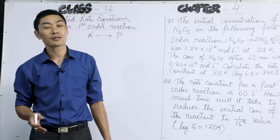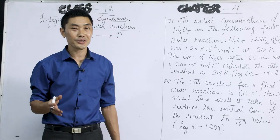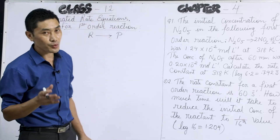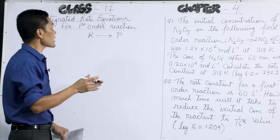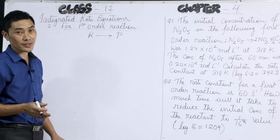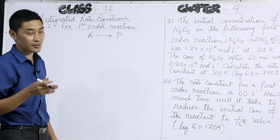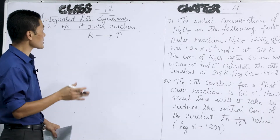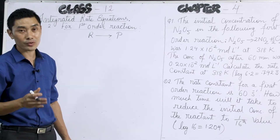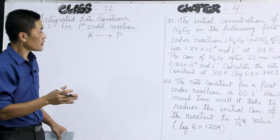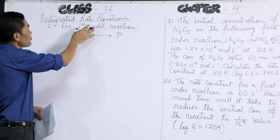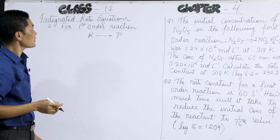Hello dear students. Let us continue with what we started in the last class. We were deriving the integrated rate equations for zero order reactions and first order reactions. For zero order reactions we have already derived, and we stopped here in the last class for first order reaction.